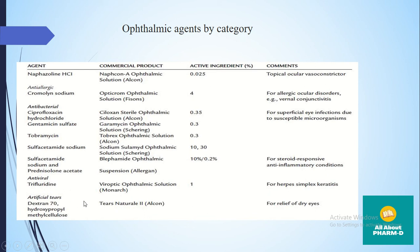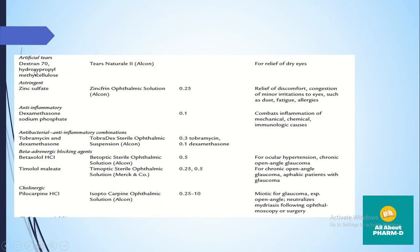For antivirals, Trifluridine is used for herpes simplex keratitis. We also have artificial tears — for conditions where eyes are very dry, such as in dry climates, causing dryness and redness. For relief of dry eyes, Dextran 70 and hydroxypropyl methylcellulose are used as artificial tears.